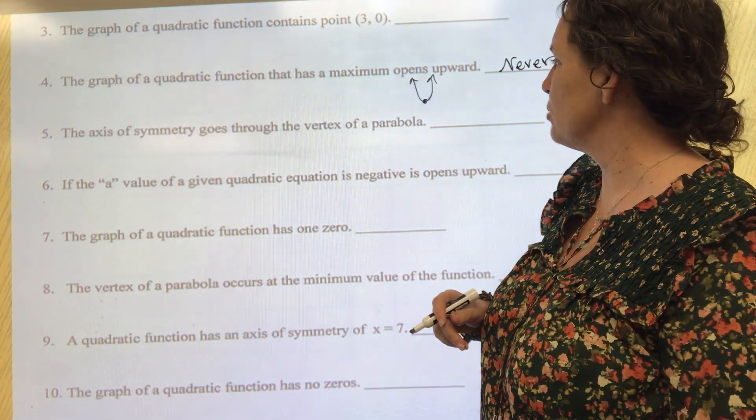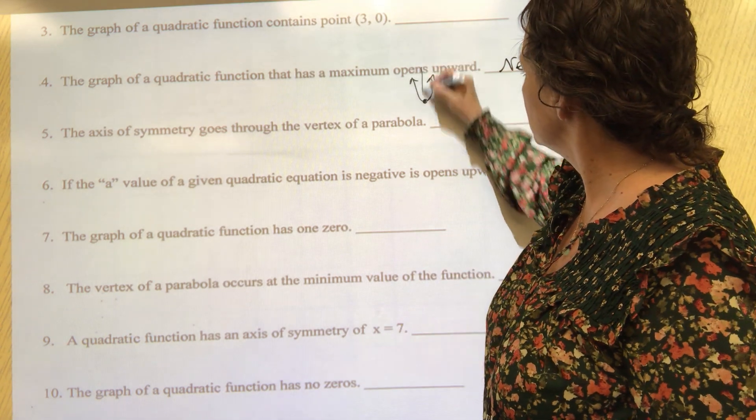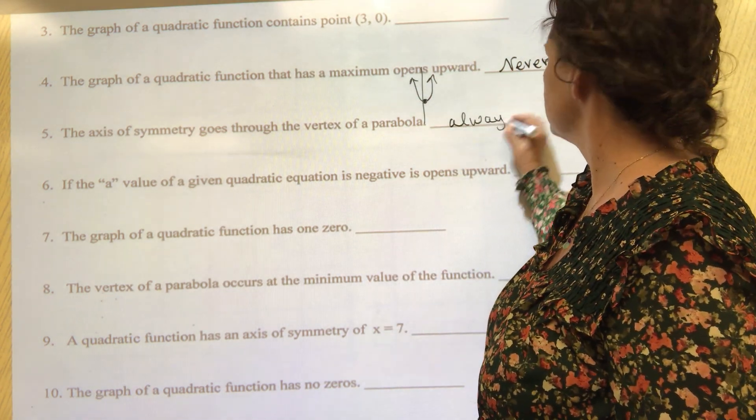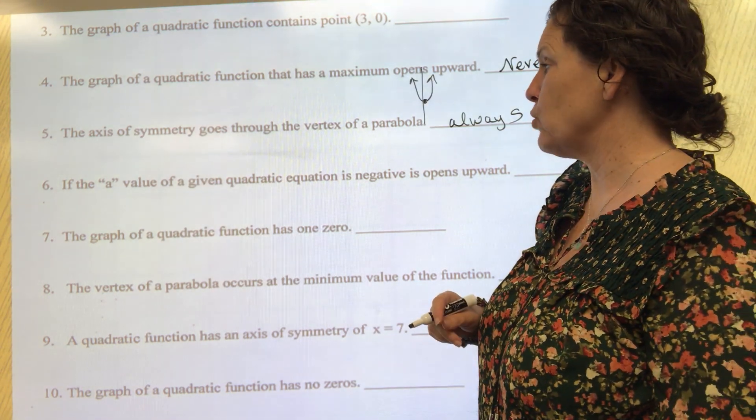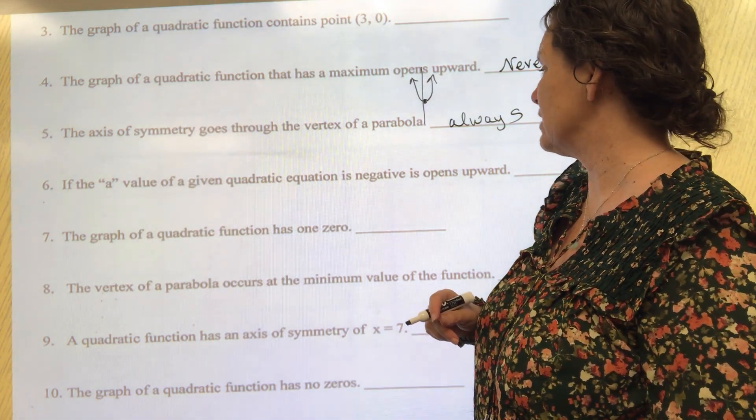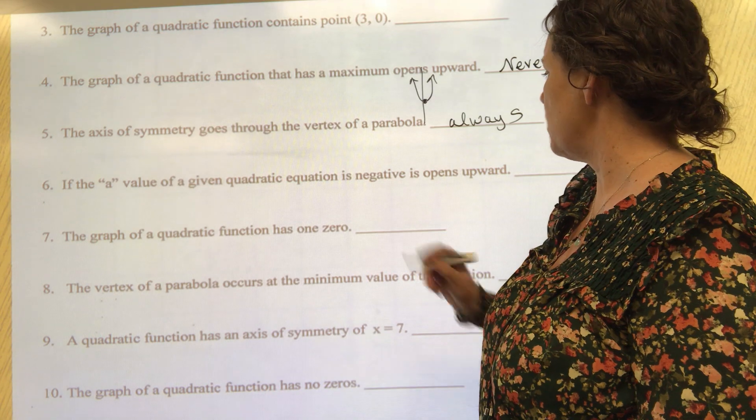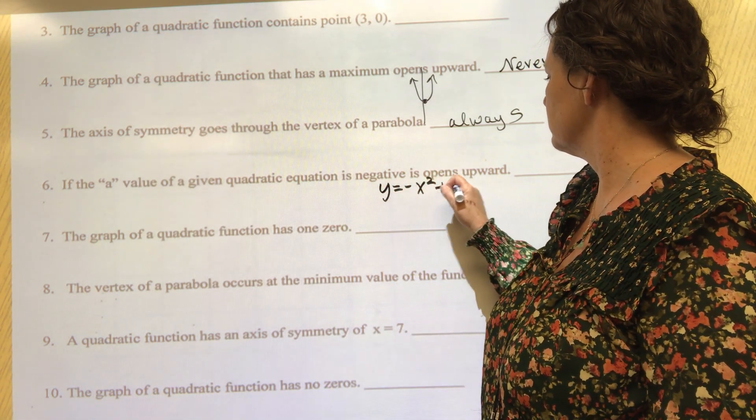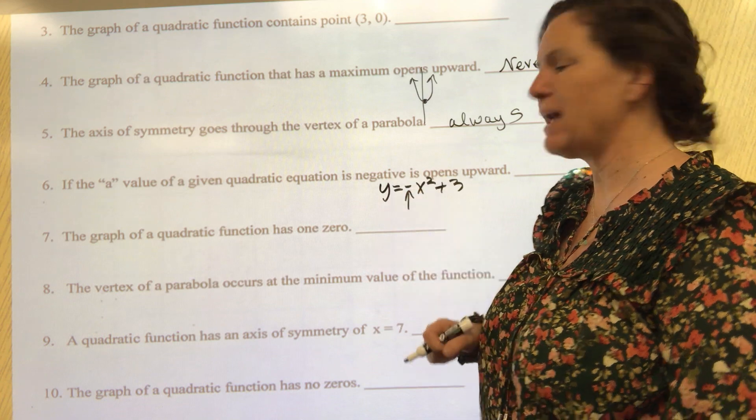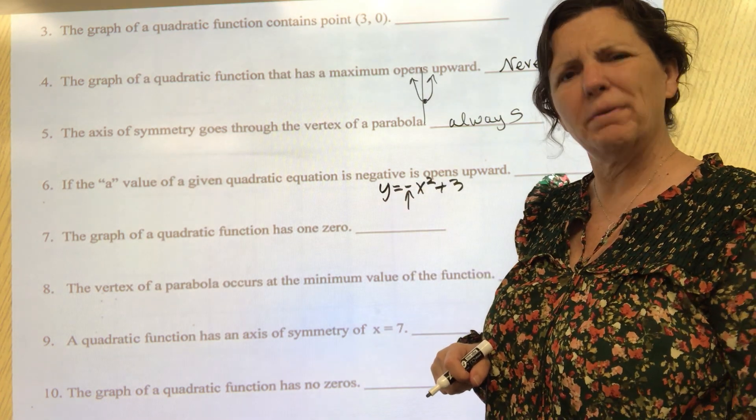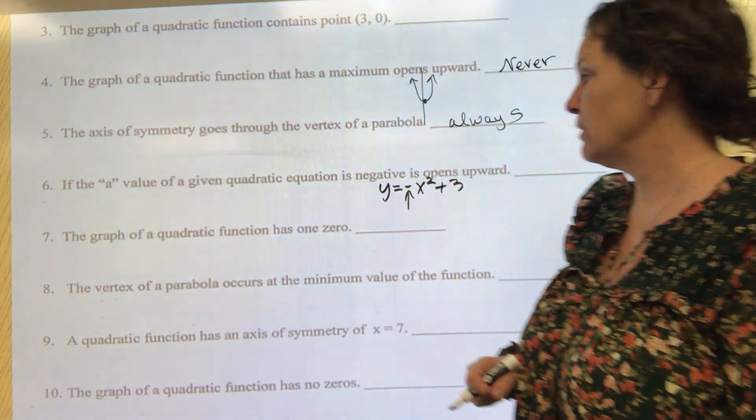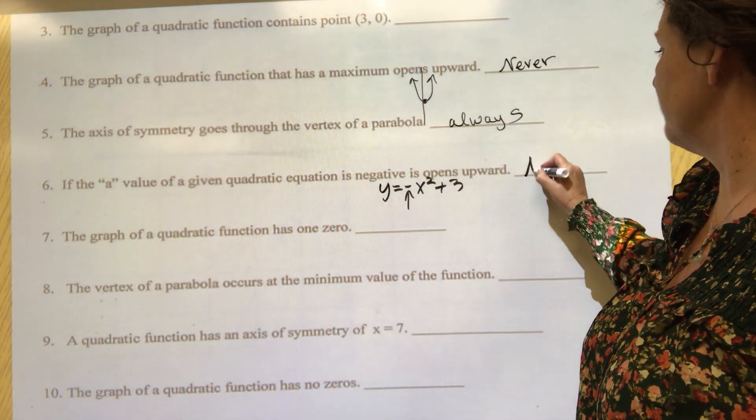The axis of symmetry goes through the vertex of a parabola - always. If the a value of a given quadratic equation is negative it opens upward - let's check. There's my a value, it's negative. Is that going to open up or is it going to open down? Yeah, that's open down, so that's a never.